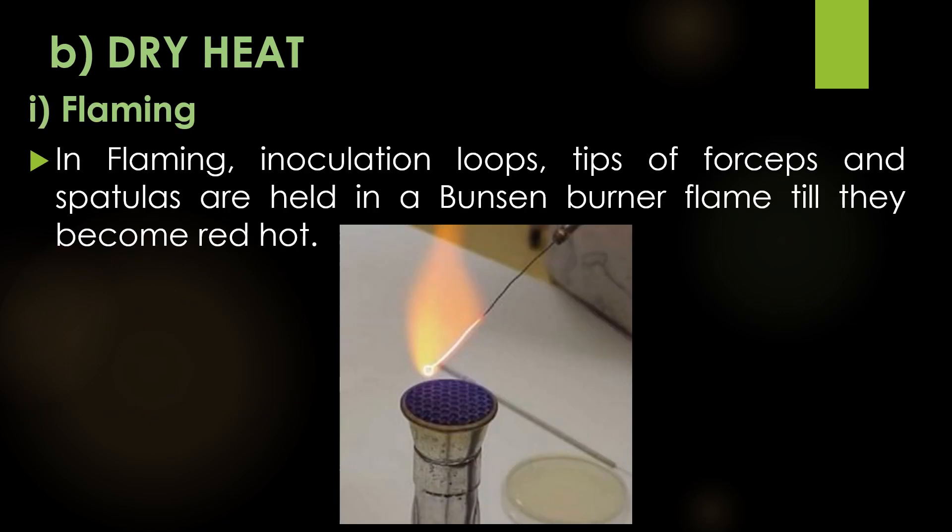The second method of physical sterilization is dry heat. Flaming is the first method of dry heat sterilization. In flaming, inoculation loops, tips of forceps, and spatulas are held in the Bunsen burner flame until they become red hot.